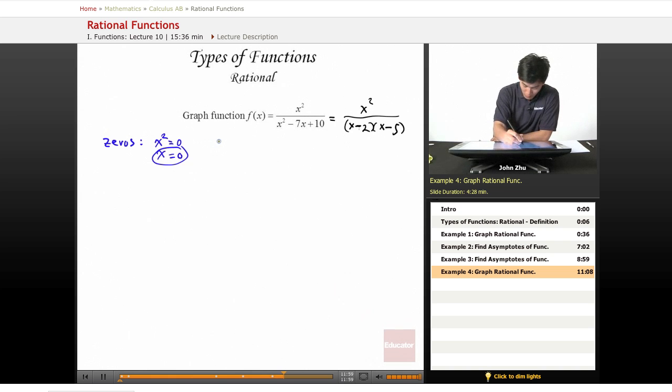If we look for the y-intercepts, which means y equals 0, and looking for asymptotes. Vertical, vertical.